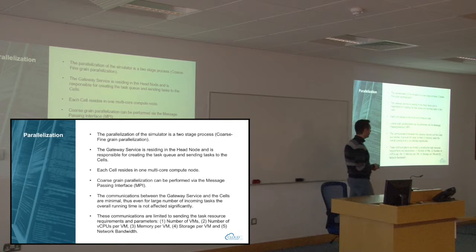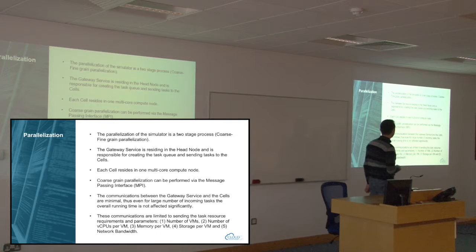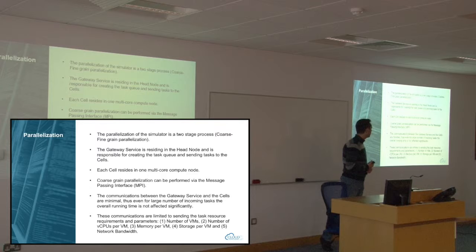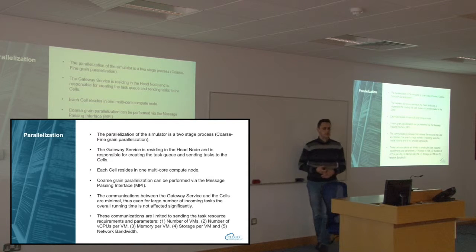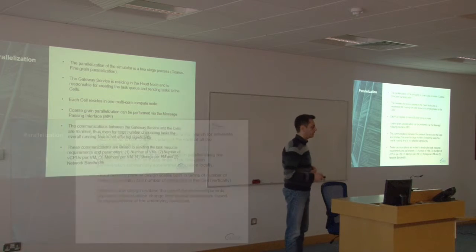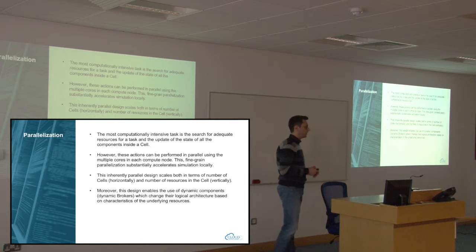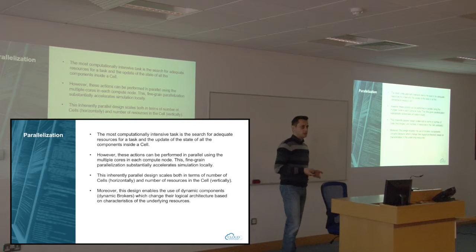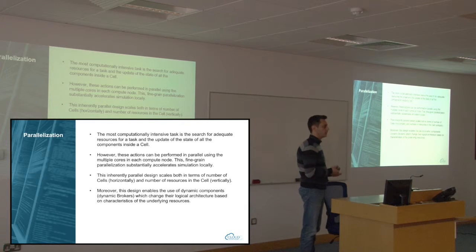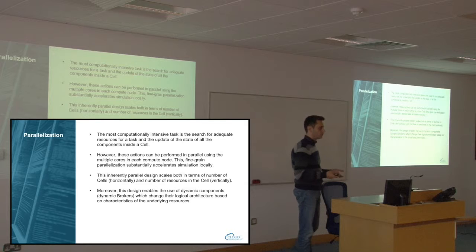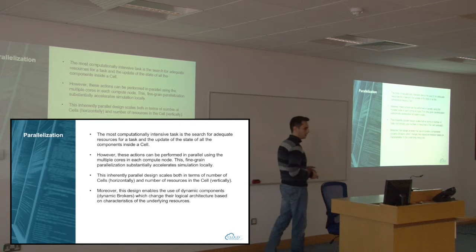We only send a few things via MPI: the number of virtual machines, the number of virtual CPUs per virtual machine, memory, storage, and network bandwidth — so these are sent really fast. The computationally intensive part of our simulation is the search for adequate hardware resources so that each task can be assigned to a specific server. For this reason, we use OpenMP in order to accelerate this process.